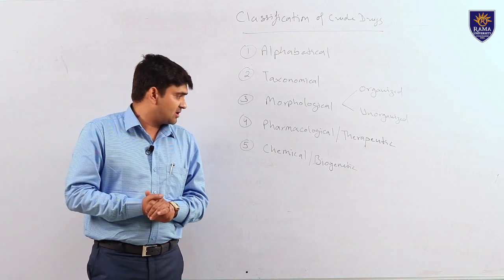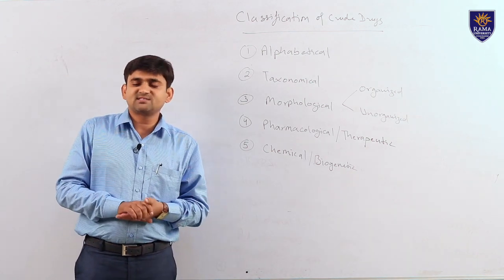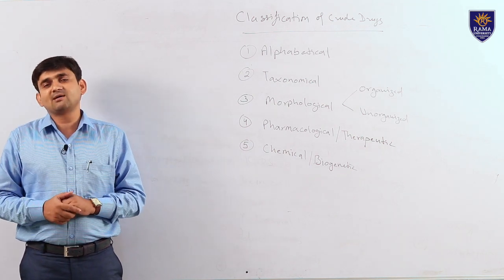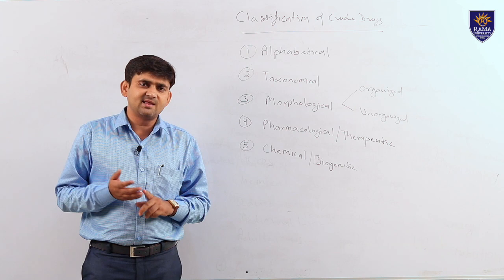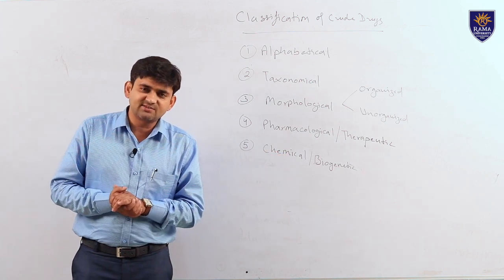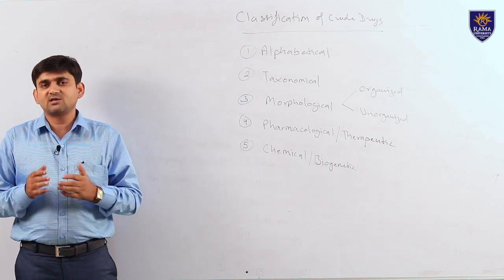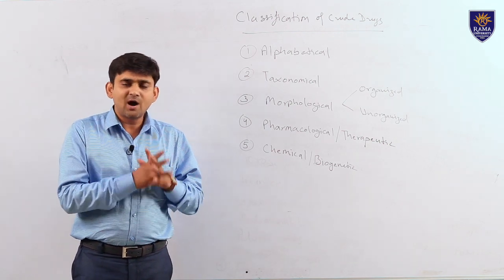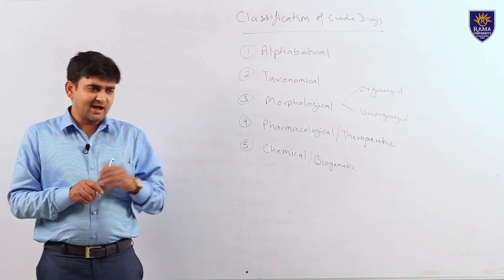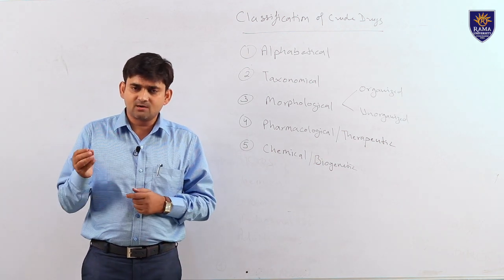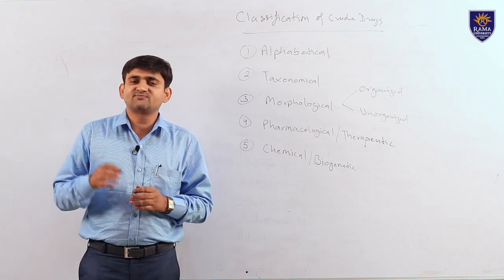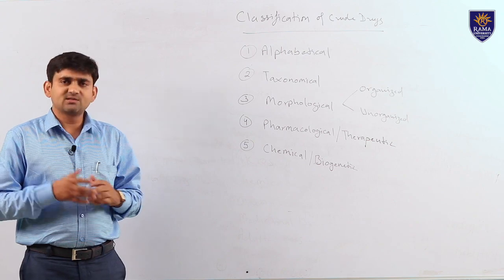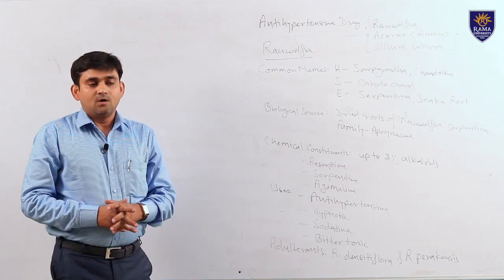The last classification is chemical and biogenetic classification. Here we classify drugs according to their phytochemical categories like alkaloids, glycosides, tannins, and resins. In the case of biogenetic classification, we classify drugs according to their biosynthetic or biogenetic pathway, such as drugs biosynthesized from tyrosine, tryptophan, phenylalanine, or some other pathways.